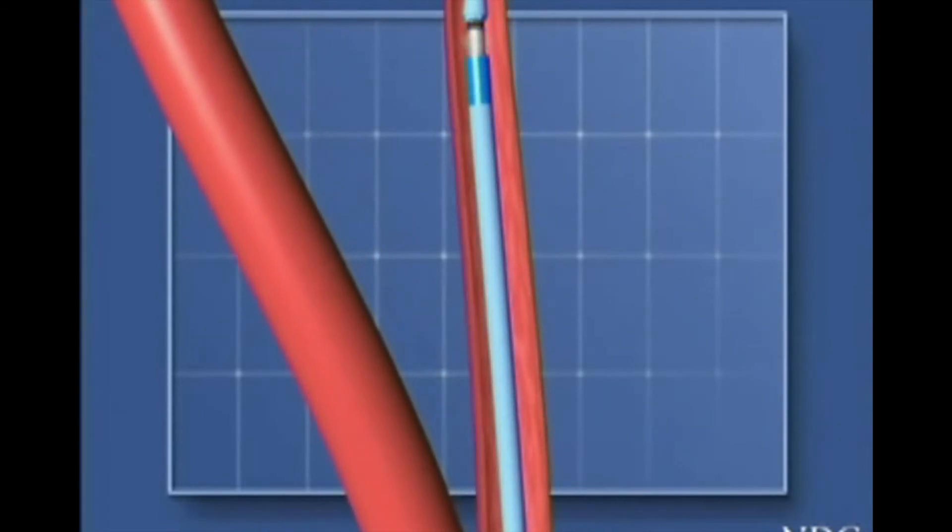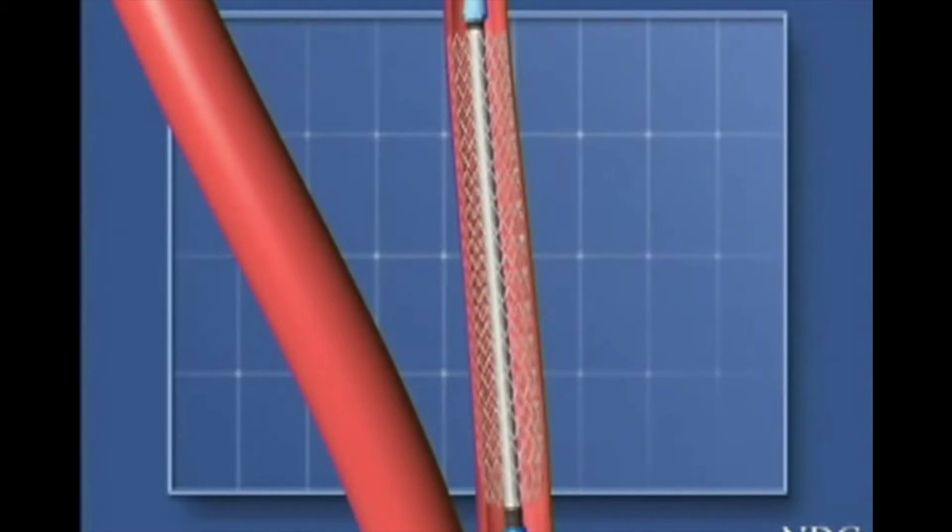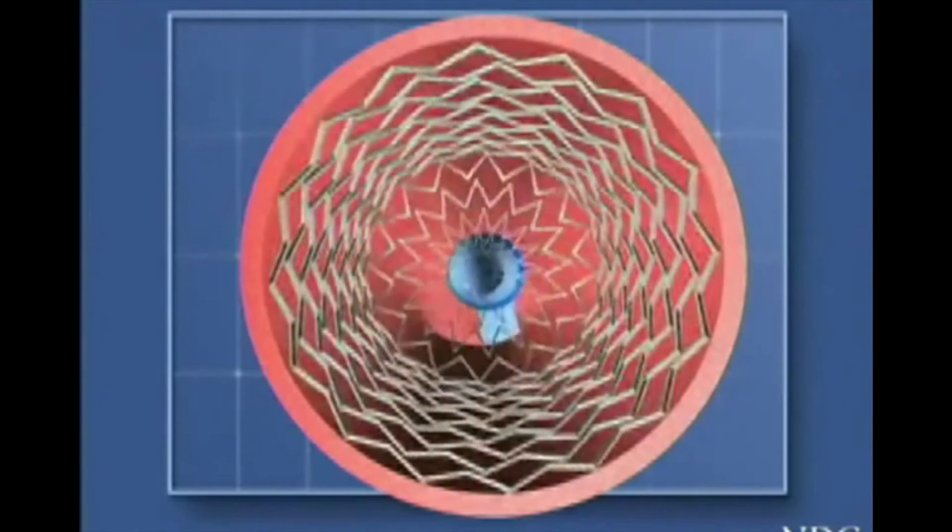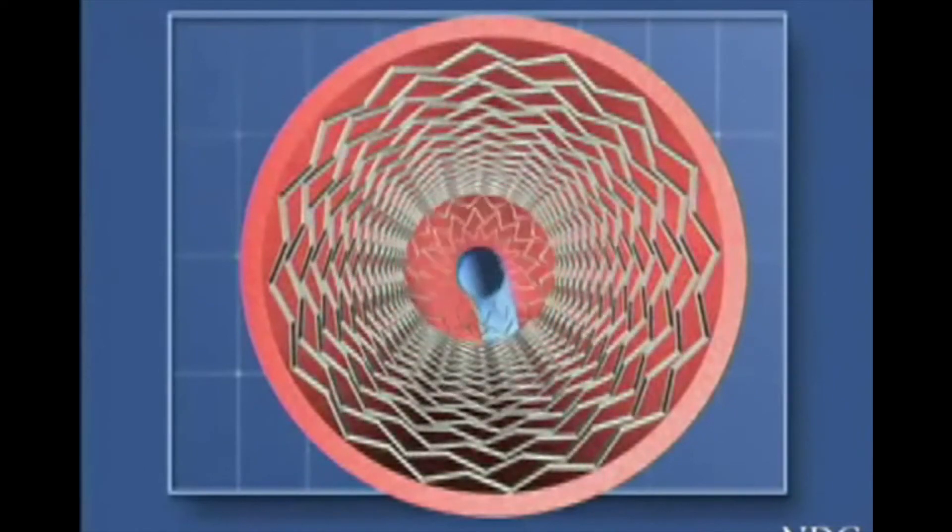Also, the method for applying the stent allows for precise placement. As you can see in the animation, the stent is inserted into the artery and then expands into the predetermined diameter shape due to the temperature of the body.